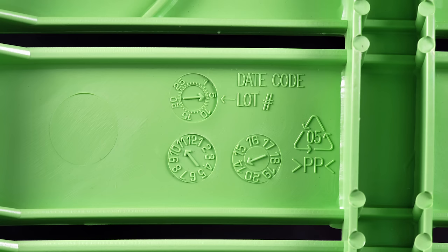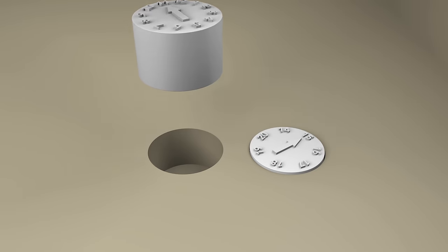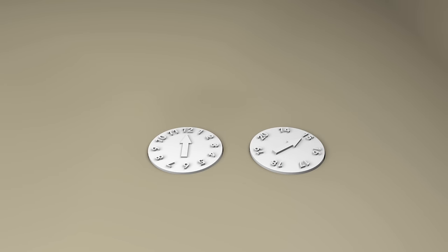Look around you and see how many injection molded objects you can find. Likely the device you're watching this on has injection molded parts. You should be able to find ejector pin witness marks and parting lines, but you may find something like this. It's a date wheel that shows the month and year the item was made. These are created by removable inserts and can be changed out for each run of the mold. They're very useful for tracking down defects.